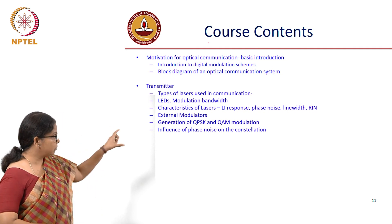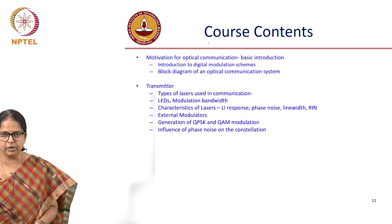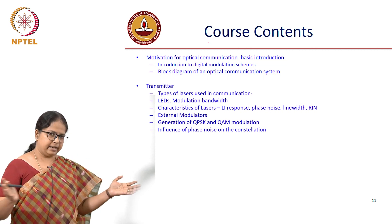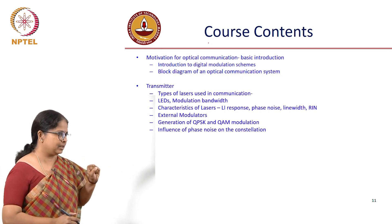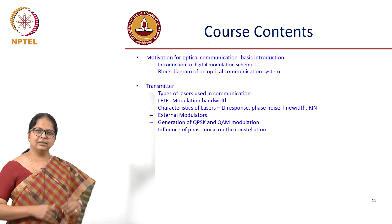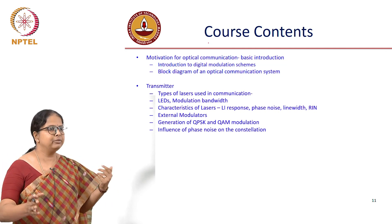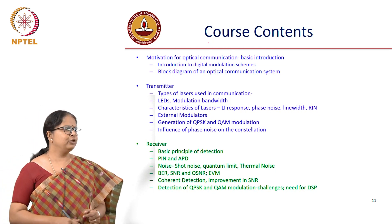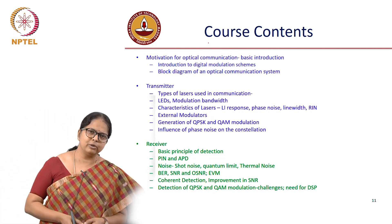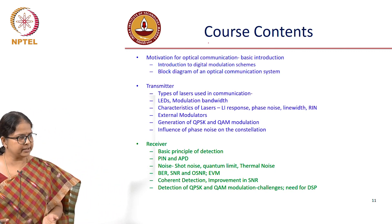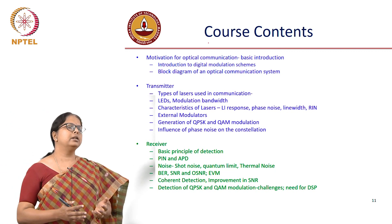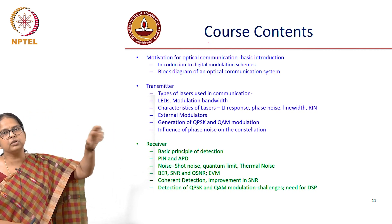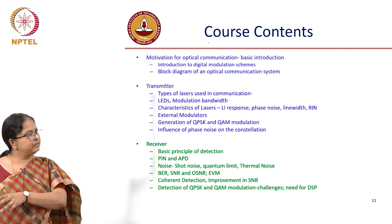The next part of the course covers the transmitter: what kind of transmitters can you use for optical communication, which transmitter would you use for specific requirements, and critical parameters like wavelength, modulation bandwidth, and attenuation. The second part is the receiver: should you use a photodiode or an avalanche photodiode, a direct detection scheme or a coherent detection scheme? You will also learn about noise added in the whole process — sources of noise at both the transmitter and receiver.